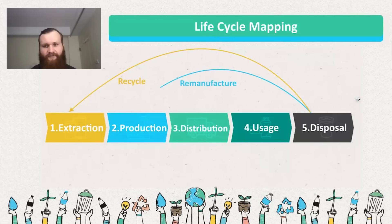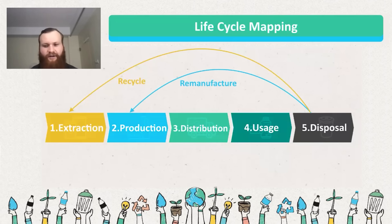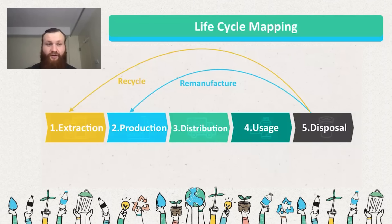The next step is remanufacturing. This is quite similar to recycling, but instead of breaking the product back into its raw material form, it can be made into something new. An easier example for remanufacturing is often with metals — metals don't need to be repurified often. If it's a pure metal or pure glass, it can be reheated and reshaped into something new. Remanufacturing and recycling come hand in hand.